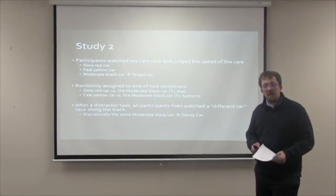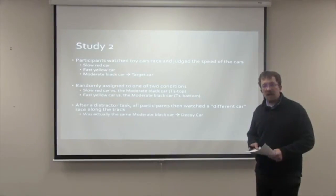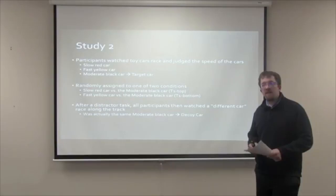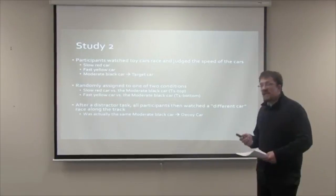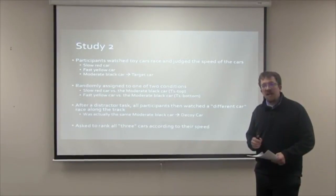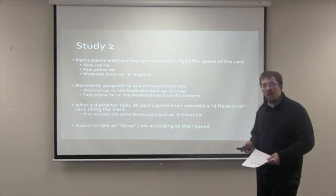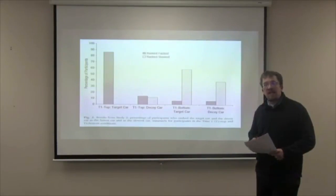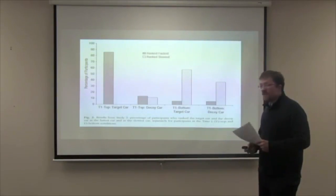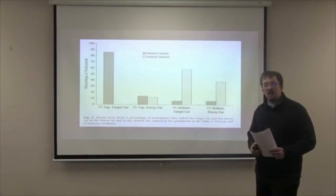After watching the two cars race, participants completed a distractor task and were then asked to watch a final car race along the track. Although they were told the final car was a different car, it was actually the same moderate speed car — the researchers considered it a decoy car. Participants were then asked to rank the three cars according to their speed. When the moderate speed car was paired with the slower car in the T1 top condition, participants rated it as being the fastest. However, when paired with the faster car in the T1 bottom condition, it was rated as being the slowest.